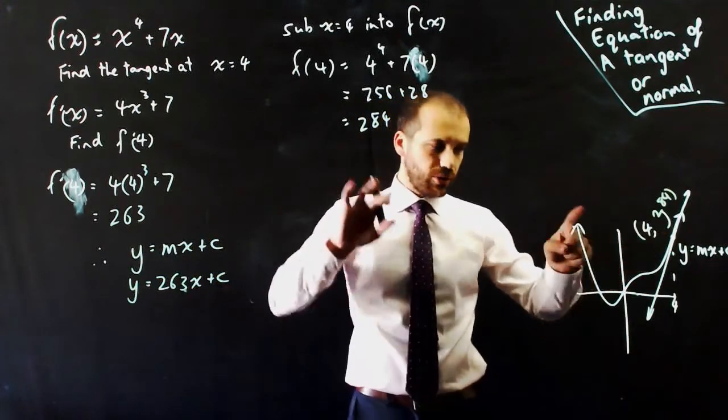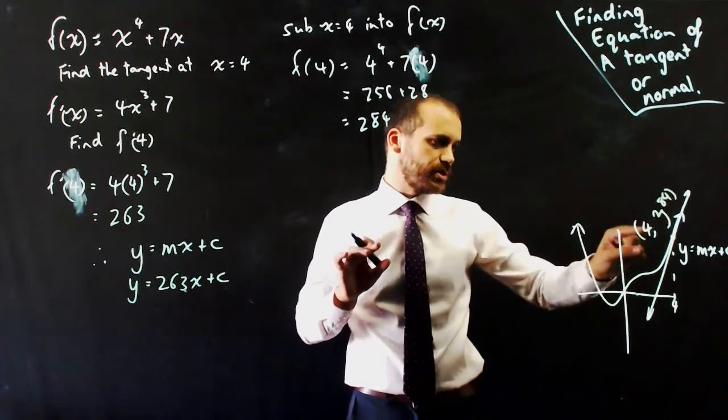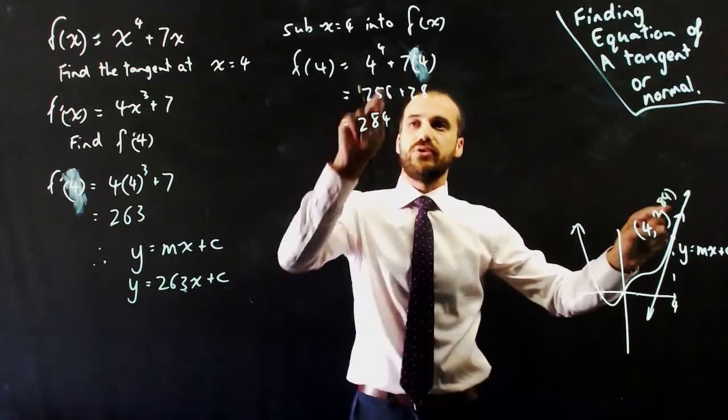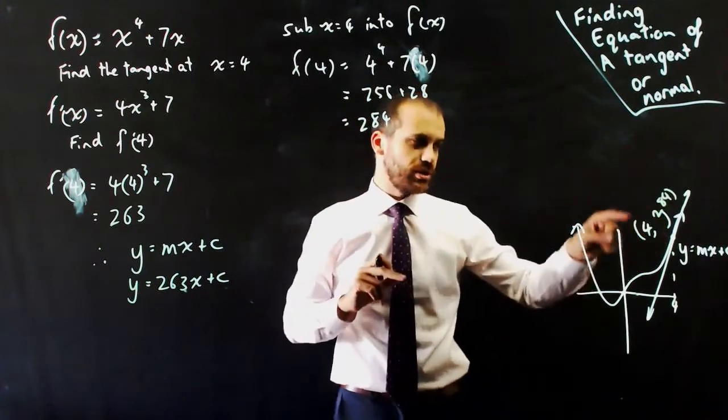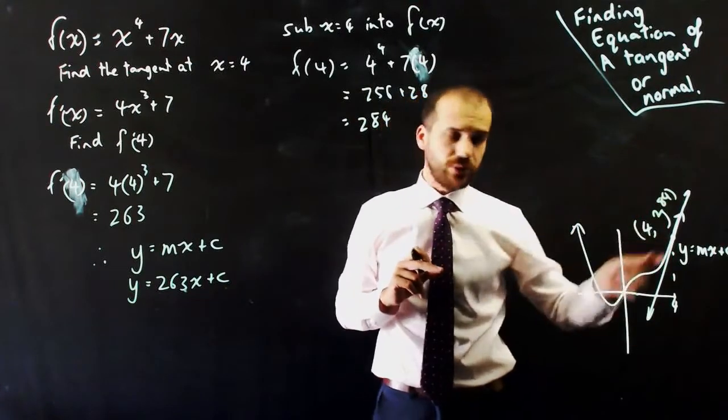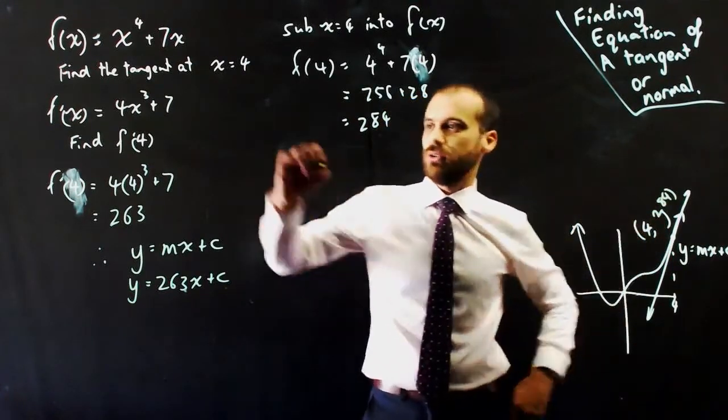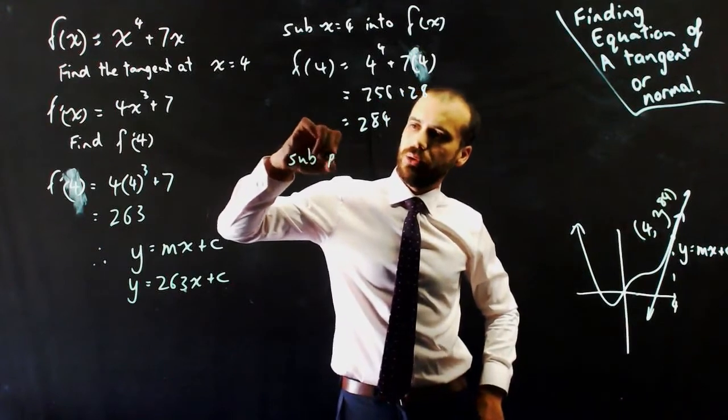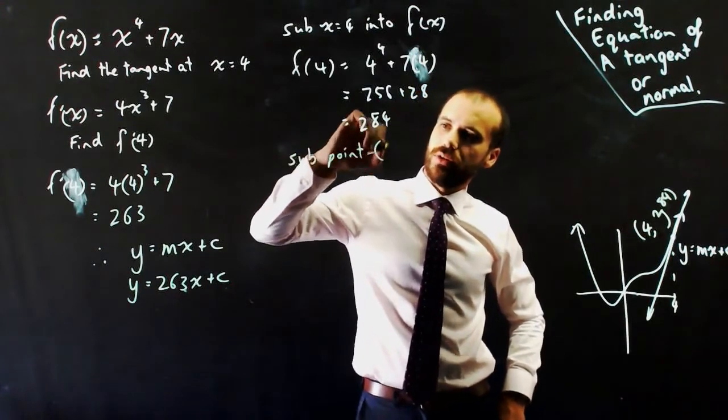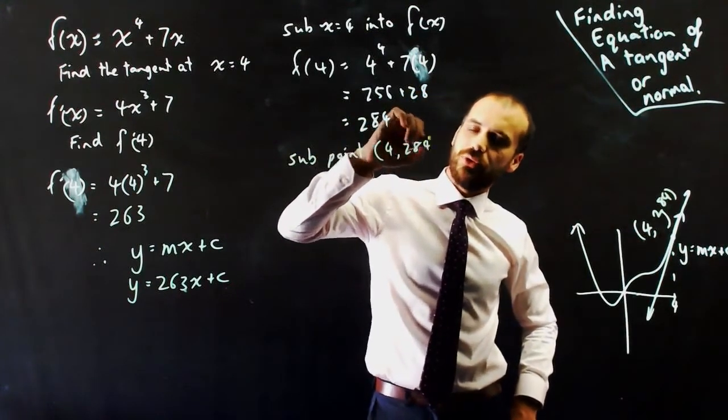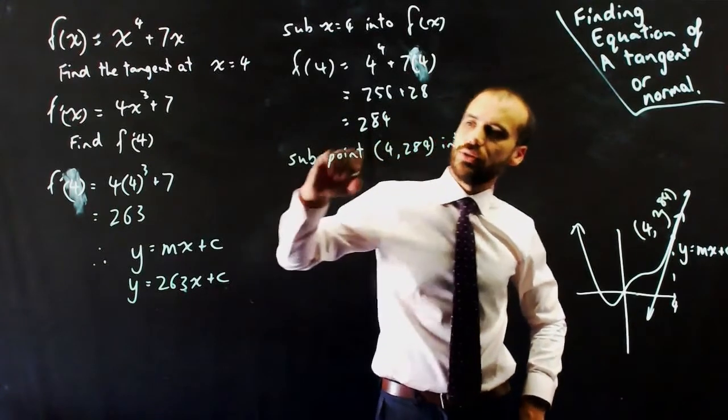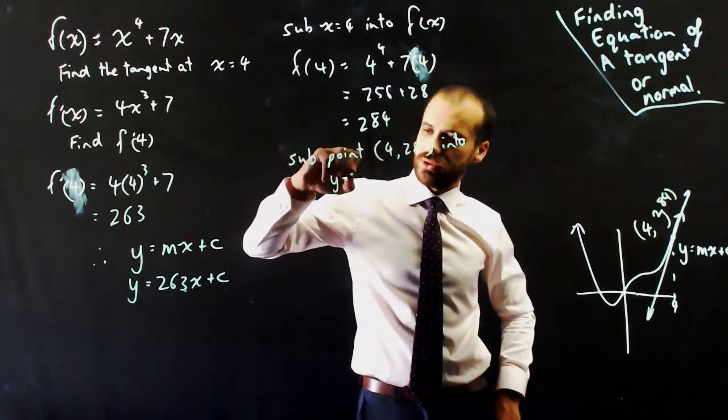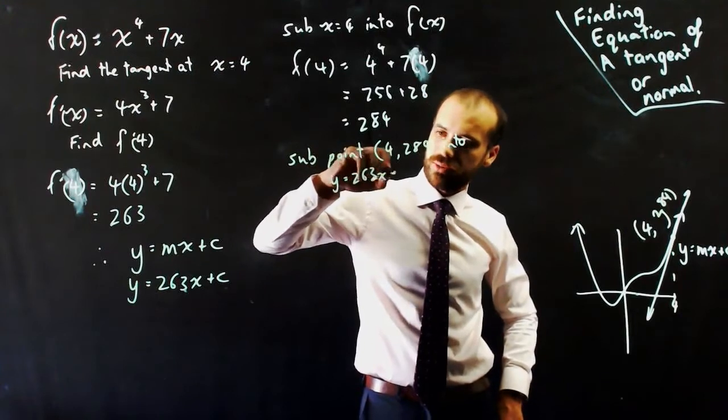I also know that on my curvy line, it passes through (4, 284) because I subbed that into my original equation, which means that my straight line also passes through (4, 284). So I can sub point (4, 284) into y = 263x + c.